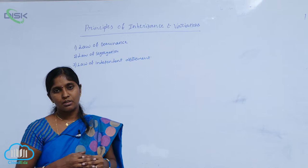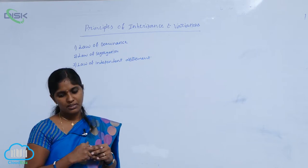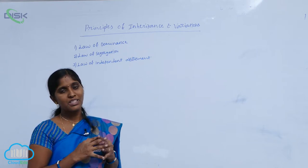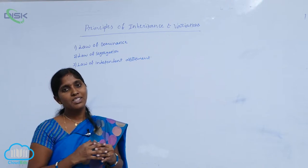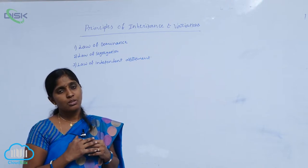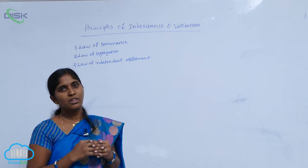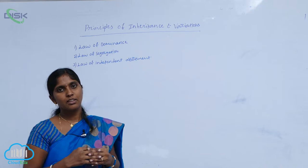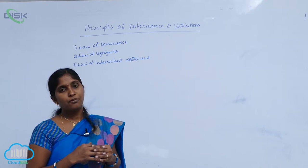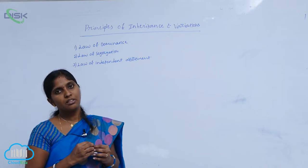Law of dominance. What is the law of dominance? The law of dominance states that characters are controlled by discrete units. What are the units controlling characters? They are factors. A factor is nothing but a gene, and factors occur in pairs.